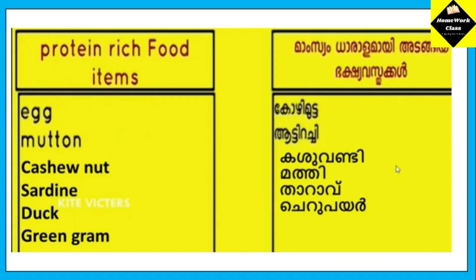Protein-rich food items include egg, mutton, cashew nut, sardine, duck, and green gram.